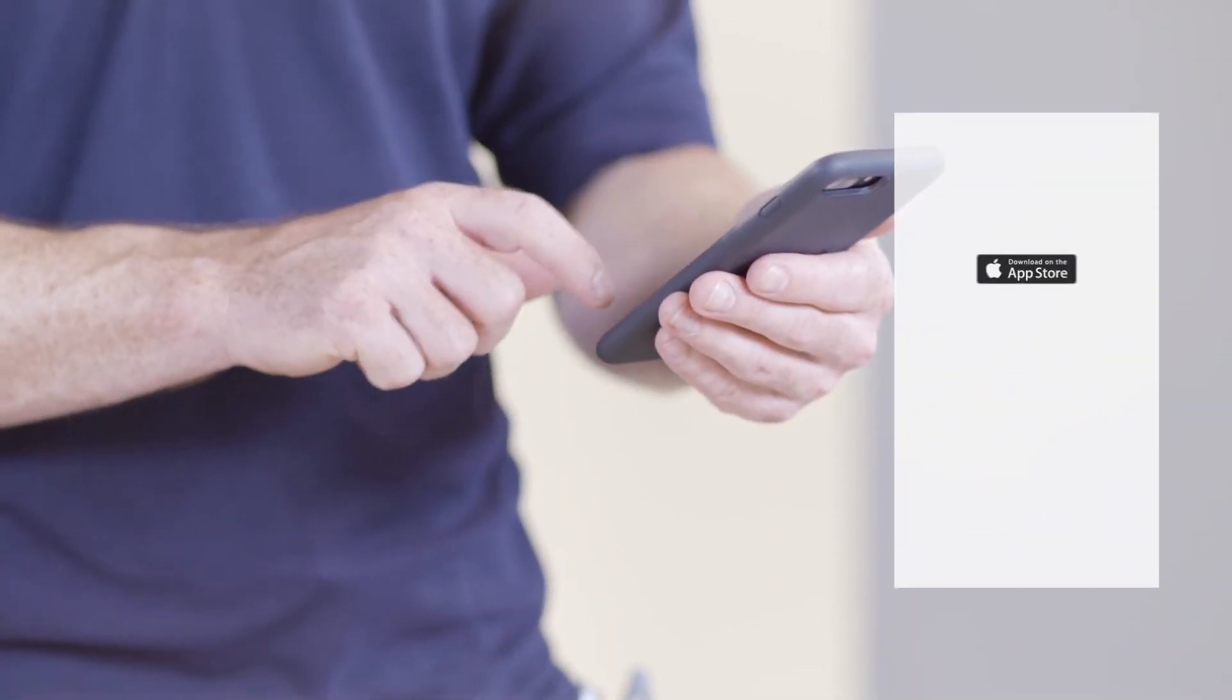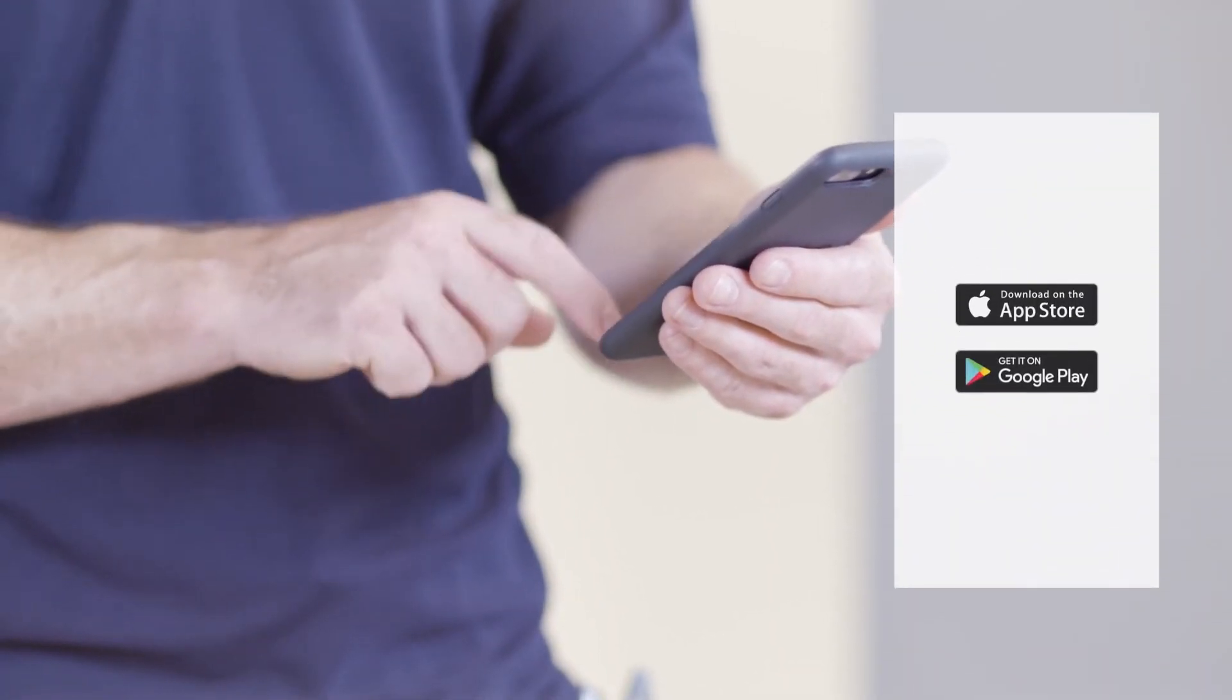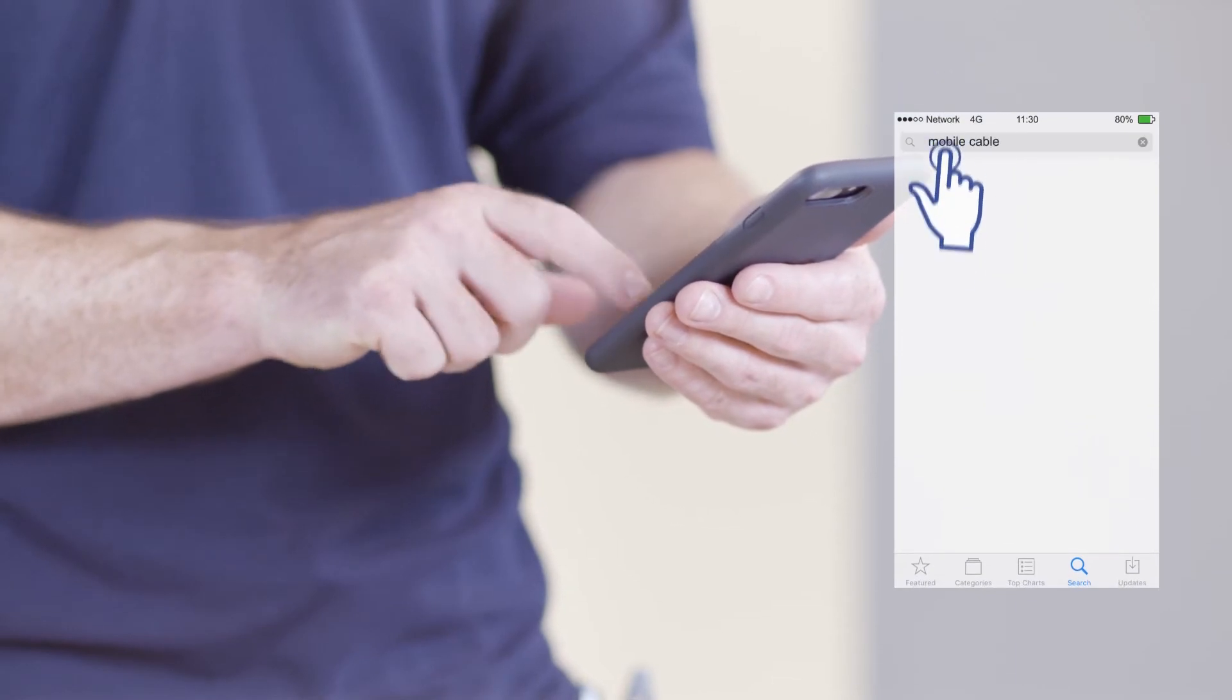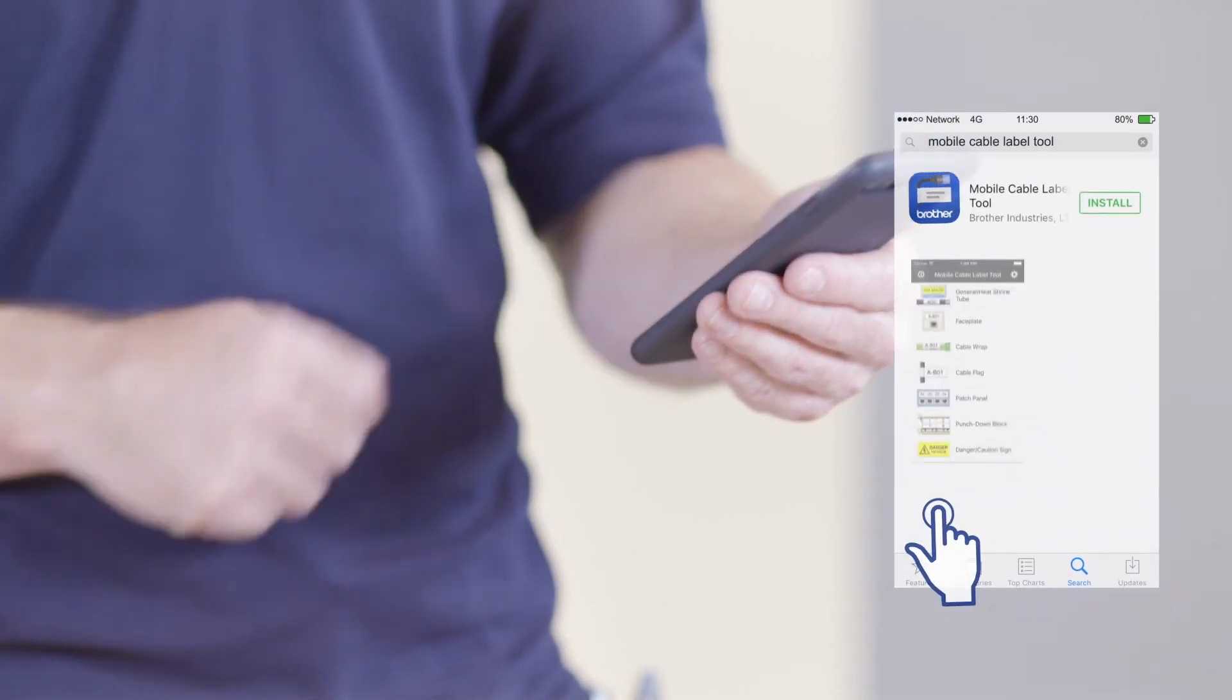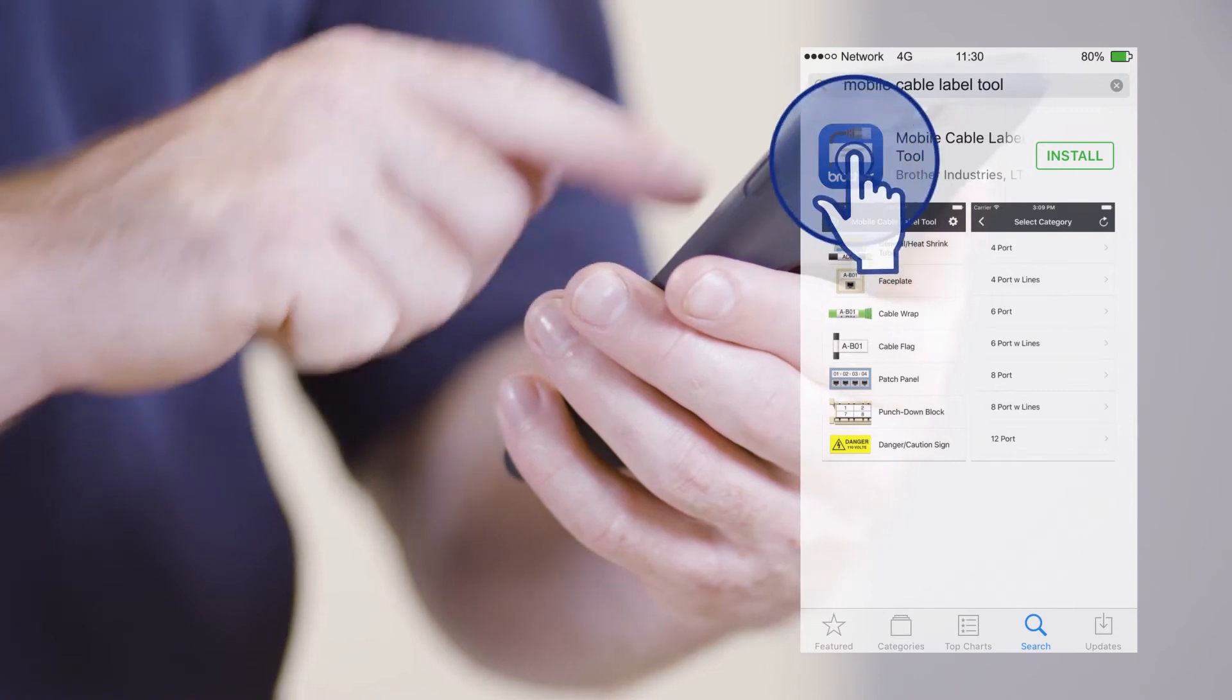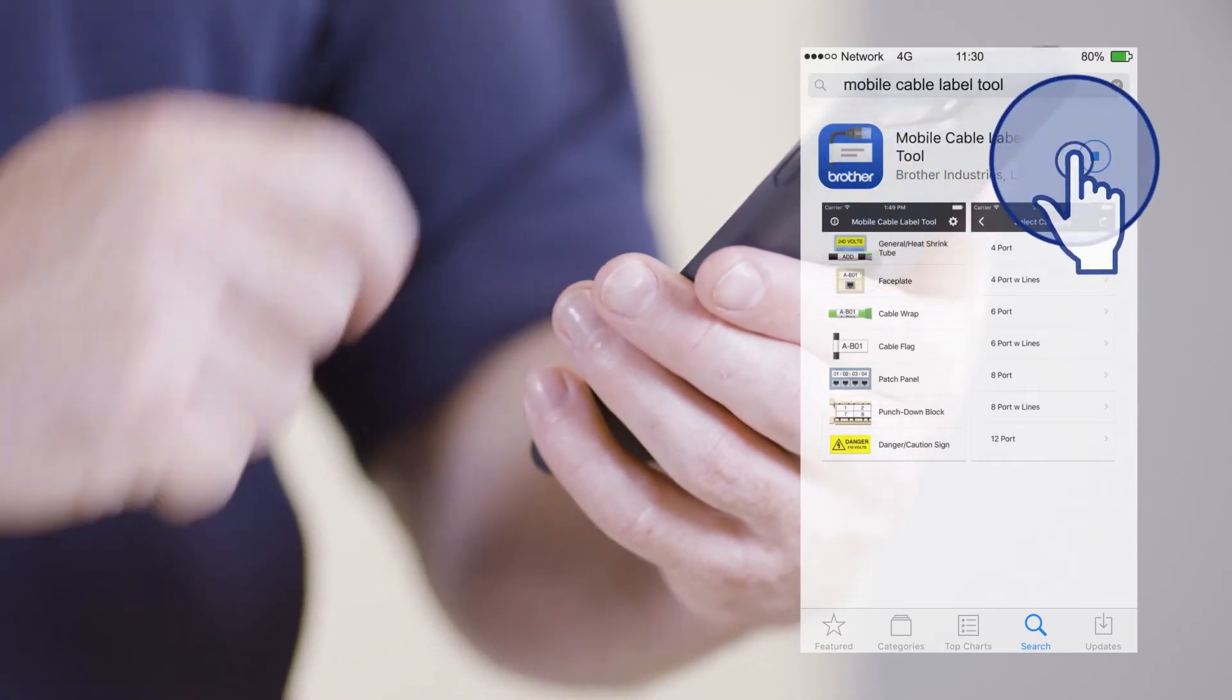The app can be downloaded from the App Store or Google Play. Simply type mobile cable label tool into the search bar, click on the Brother icon, and then click install.